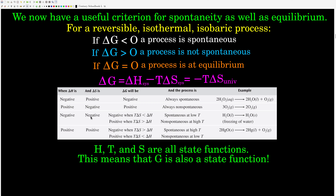Here is where it gets interesting. If delta H is negative but delta S of the system is also negative, that means we have a positive term and a negative term, and whichever is bigger will dominate. If the T delta S term is smaller than our delta H term — that is, if delta H dominates — we will have a negative delta G and the process will be spontaneous. That happens at lower temperatures. As we increase the temperature, this term becomes larger and larger, and at one point it will overpower delta H, giving a positive delta G and a non-spontaneous process. You'll see in a few minutes we can calculate exactly what temperature that happens — the equilibrium temperature.